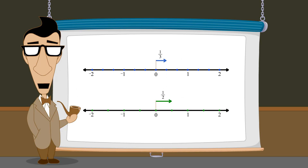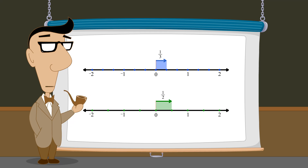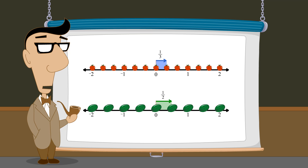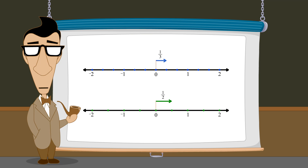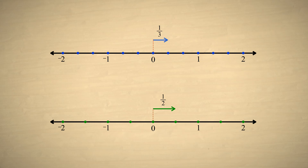Since each fraction is expressed using different-sized divisions, it's like trying to add apples and watermelons. The solution is to create new divisions which will work for both fractions. We need to divide the unit length in such a way that each fraction will fit perfectly into these new divisions. If we do this, then both fractions can be represented by some number of these new divisions, giving them the same denominator — in other words, a common denominator. We can then simply add their numerators.